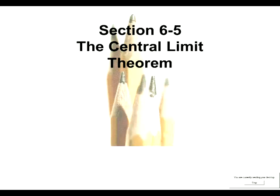Let's recap sections 6.2 and 6.3. Section 6.2 was the standard normal distribution, which is not only bell-shaped but also has a mean of zero and standard deviation of one. That's not very real-life, but it gives us a way of calculating probability. For distributions that aren't standard normal, we use the same calculator button and tell it the mean and standard deviation of the population.